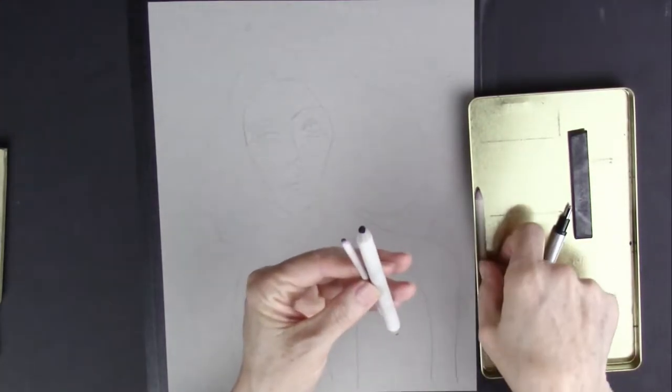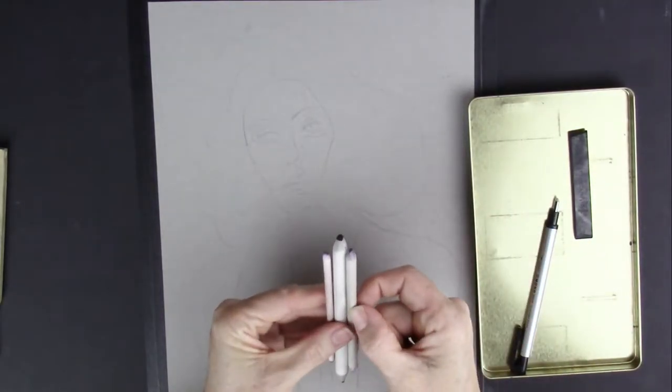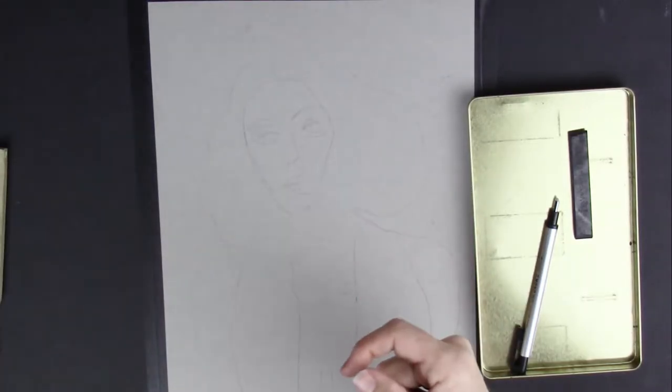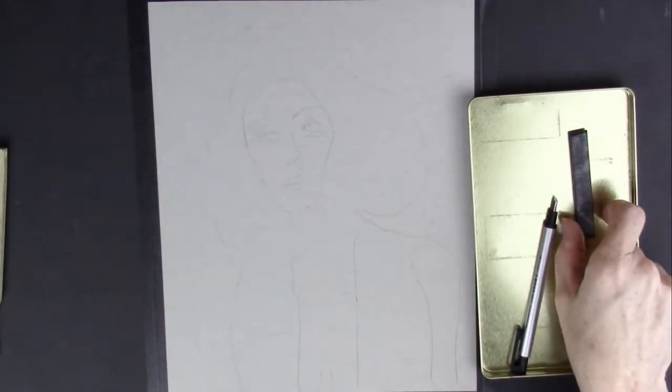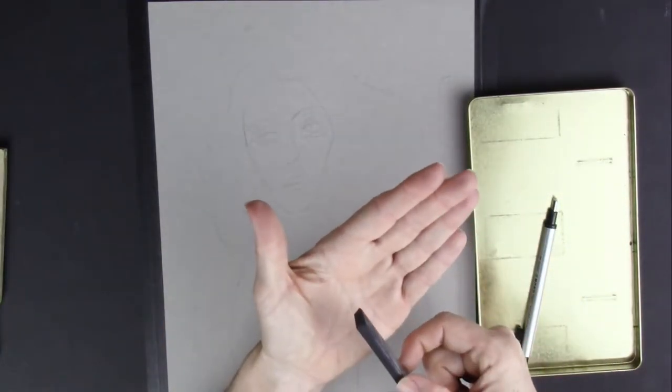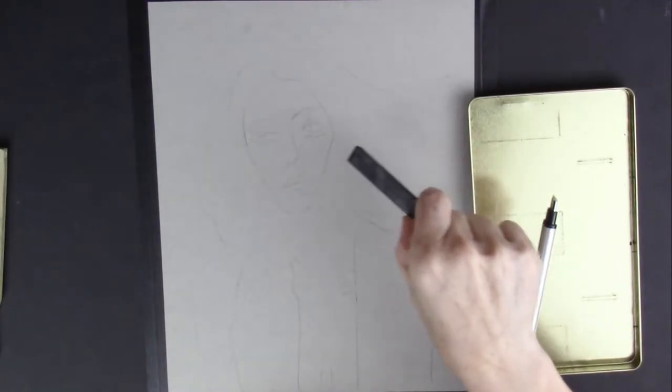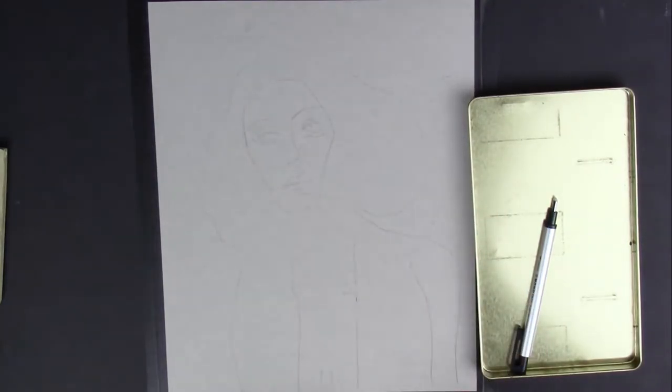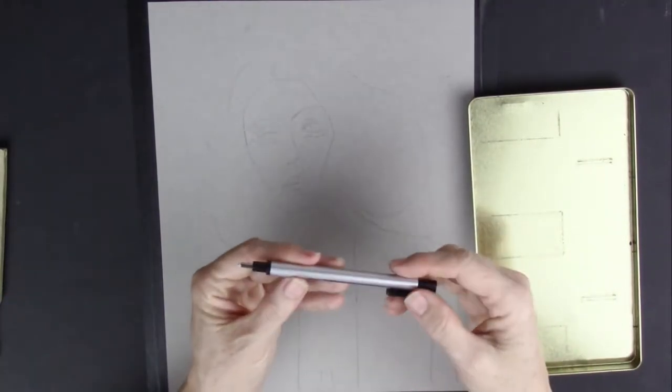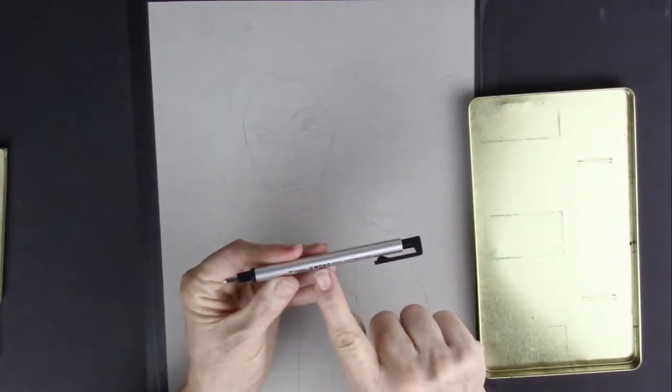These are blending stumps. I use one, two, or three sizes depending, and I also like to use this block. It's a 2B block for the large surface areas, and I like to lift highlights with an eraser or two or three.